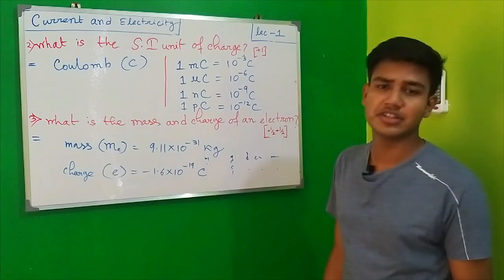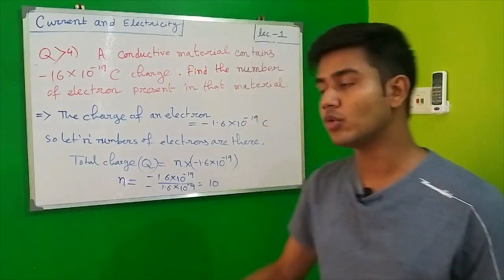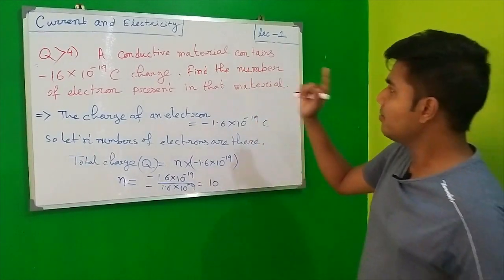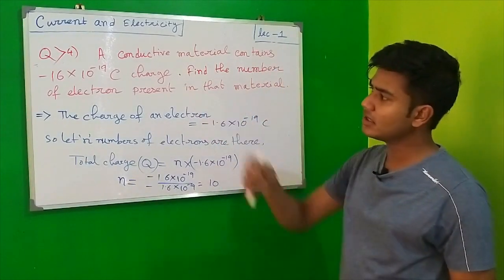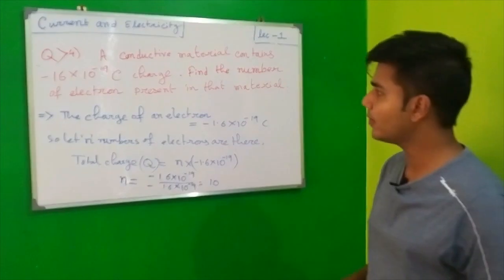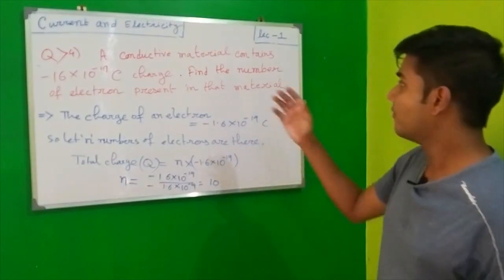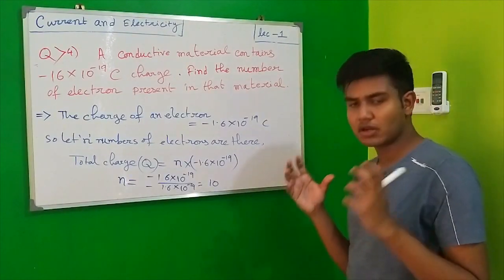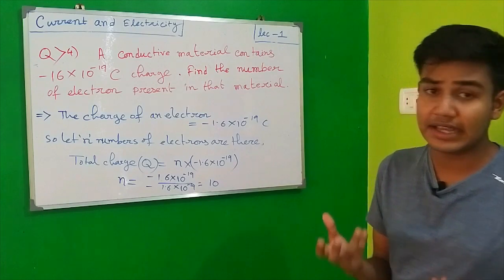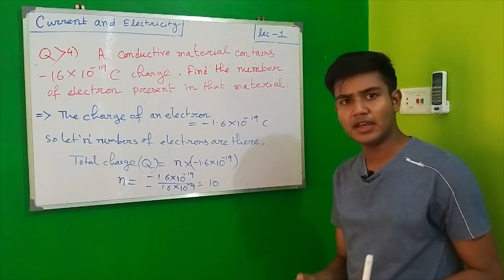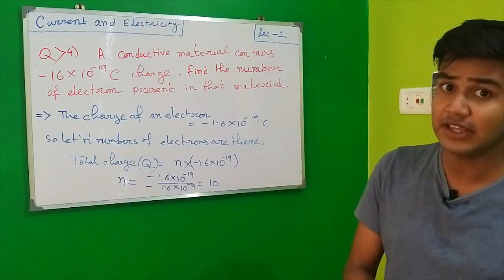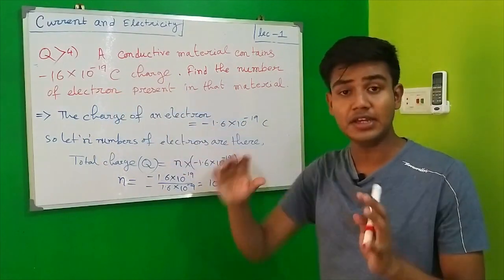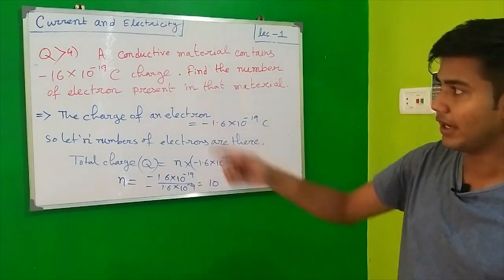Moving to question number 4: A conductive material contains -16 × 10⁻⁹ coulomb charge. Find the number of electrons present in that material. We need to find the total number of free electrons, and the total charge is provided.